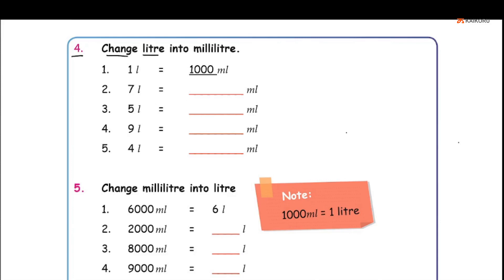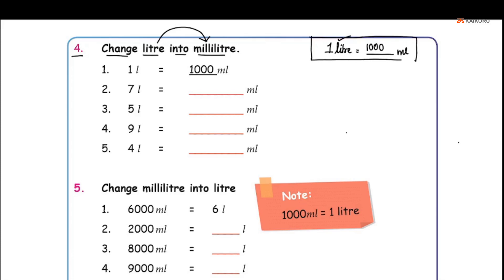Question number 4: Change liters into milliliters. This is the conversion: if you have 1 liter, how many milliliters is that? 1 liter is equal to 1000 milliliters. So 1 L is equal to 1000 ml. This is the answer and this is the conversion we use. Problem number 1: 1 L is equal to dash ml — the answer is 1000 ml.